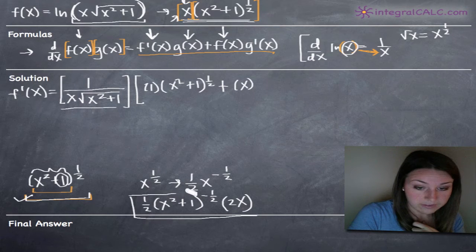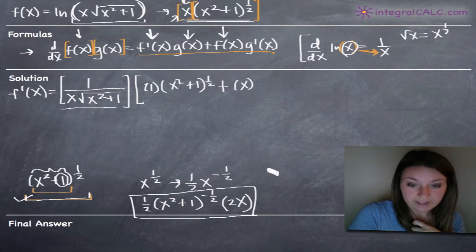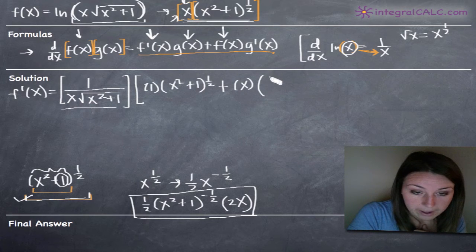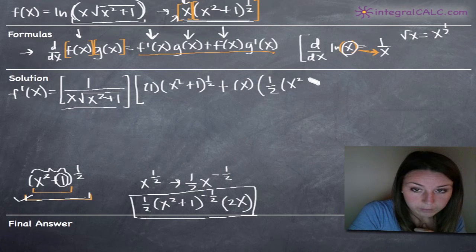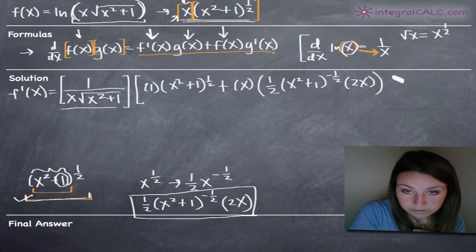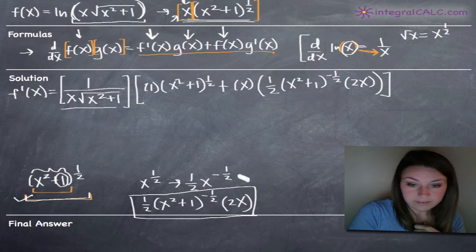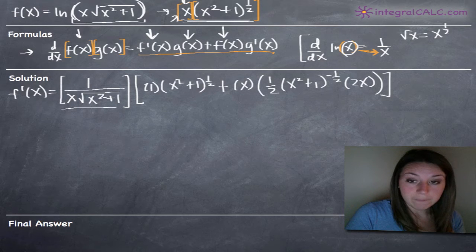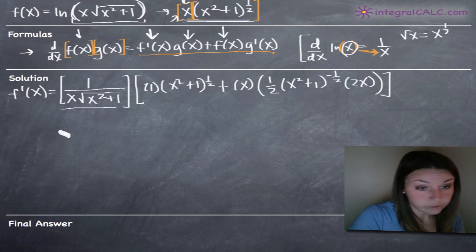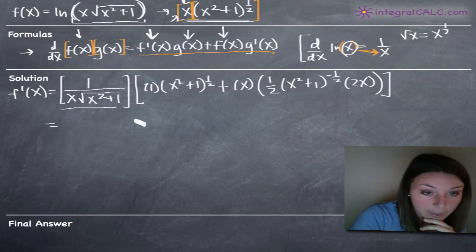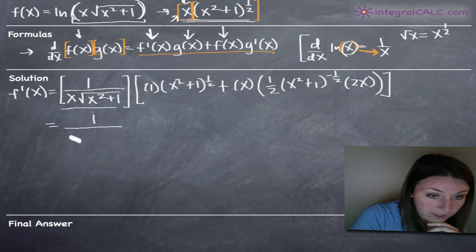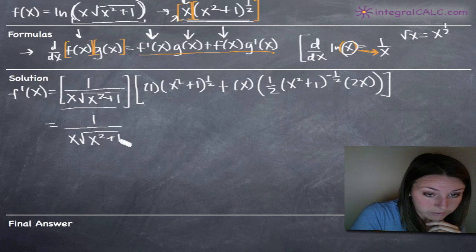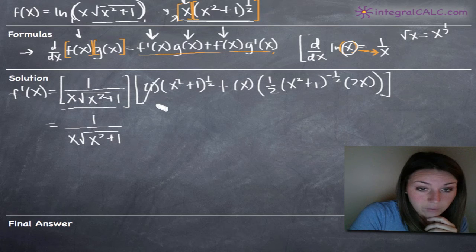So the derivative of g of x is 1/2 times x squared plus 1 to the negative 1/2 times 2x. We have now finished writing our derivative expression, and it's just a matter of simplification. To simplify, we'll have 1 over x times the square root of x squared plus 1. That 1 in the numerator is redundant, so we just have x squared plus 1 to the 1/2, which we rewrite as the square root of x squared plus 1.